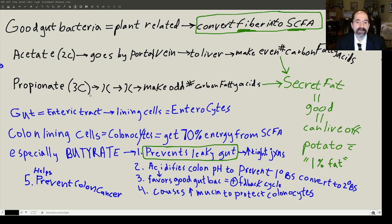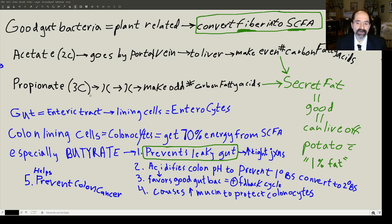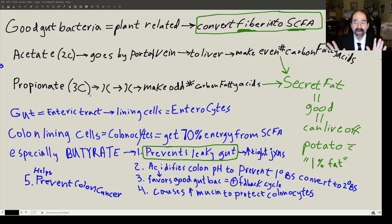The gut is called the enteric tract, so the lining cells are called enterocytes. In the colon, the lining cells are called colonocytes. The colonocytes get about 70% of their energy from butyric acid — it's tremendously important and does lots of really good things. It's almost like the hero of the intestinal tract. It prevents leaky gut, helps the colonocytes maintain tight junctions, and thereby helps prevent autoimmune diseases, things like Crohn's disease and ulcerative colitis. That's why it's so important to eat fiber.